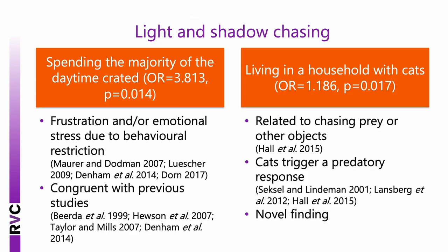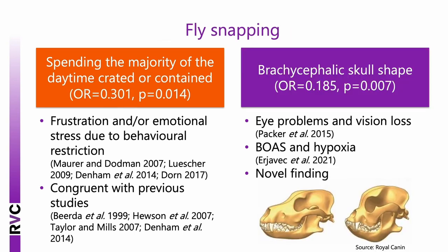Both significant risk factors for light and shadow chasing were related to current environment: spending the majority of the daytime crated, and living in a household with cats. Crating restricting a dog for most of the day may cause emotional distress and frustration due to reduced social interaction and restricted movement, both of which can lead to ARB development. This supported our hypothesis that daytime crating increases ARB risk. The finding about living with cats is novel — light and shadow chasing may relate to chasing prey or objects, with cats potentially acting as a trigger in dogs with an exaggerated chase drive.